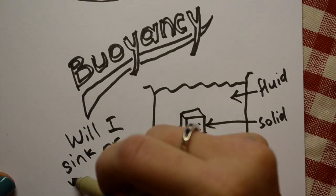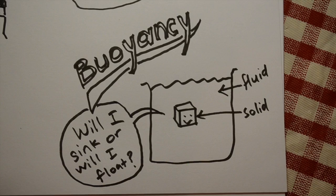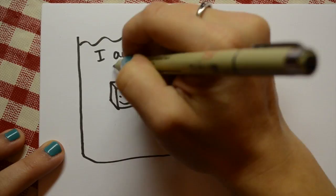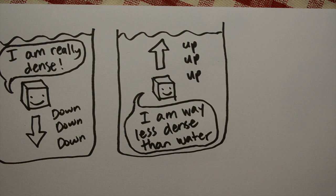Basically, buoyancy describes whether a solid object will sink or float when it's in a fluid. If it's denser than the fluid, it will sink. And if it's less dense, it'll float.